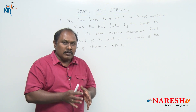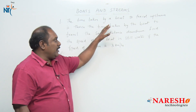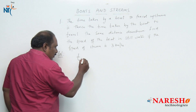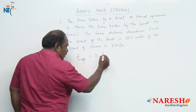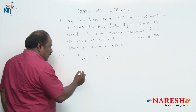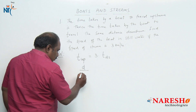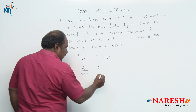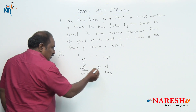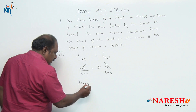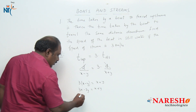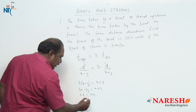First, let us write down what is given. The time taken to travel upstream is 3 times the time taken to travel the same distance downstream. The formula for time is distance by speed, so d divided by (x minus y) equals 3 into d divided by (x plus y). Solving this, cancel d and cross multiply: 3 into (x minus y) equals (x plus y), giving 3x minus 3y equals x plus y.